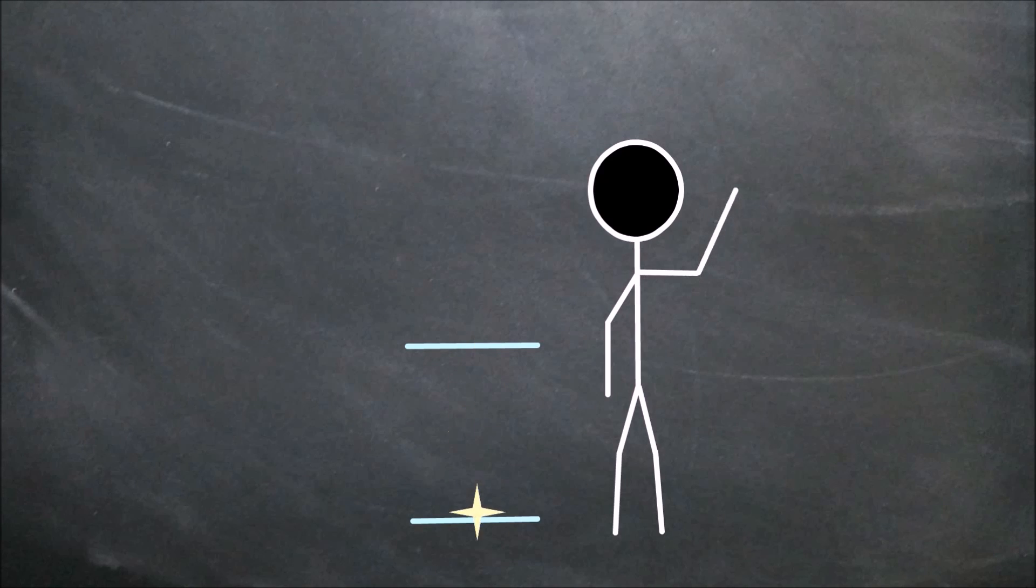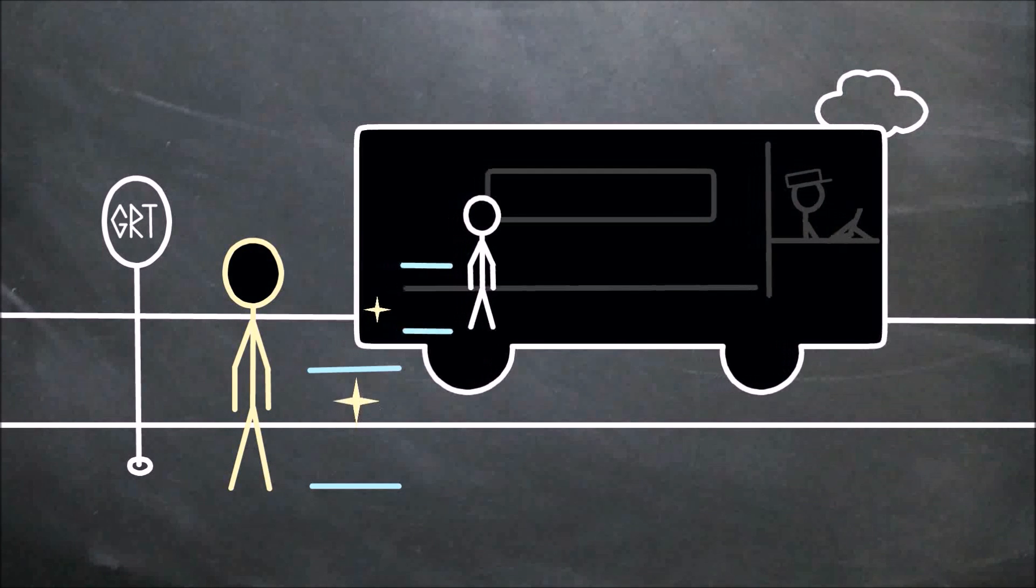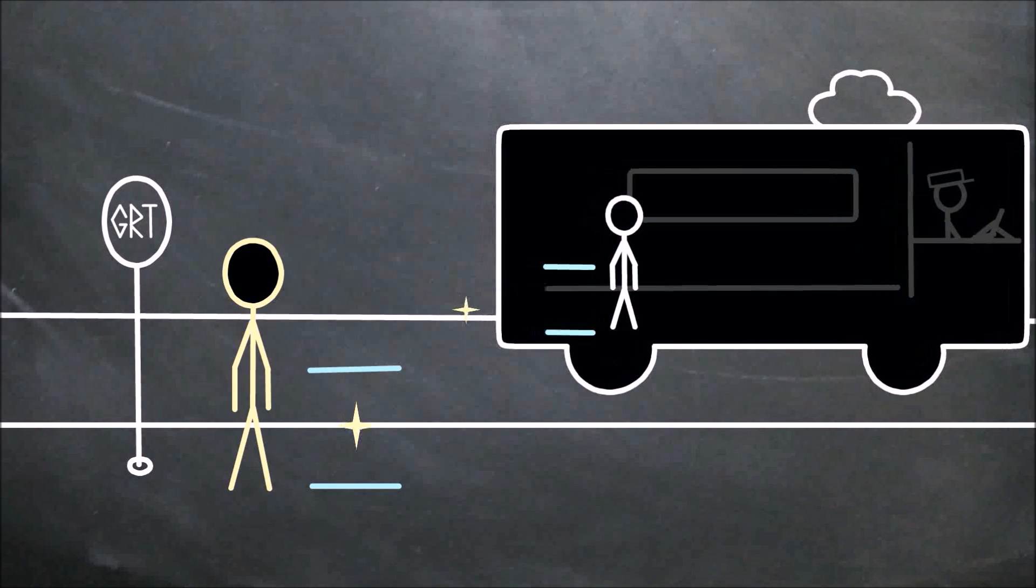This is possible because no matter what speed the bus is going, you are in an inertial frame of reference. Now what does your friend see? Something's wrong here. Let's back up for a bit.